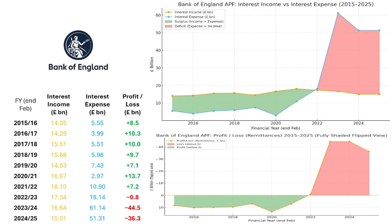My name is James and today we're going to discuss the Bank of England's balance sheet again. Last time we discussed it in terms of interest expense versus interest income and how post-2022 the interest expense exceeded the interest income, and the Bank of England is basically required to print out the difference.